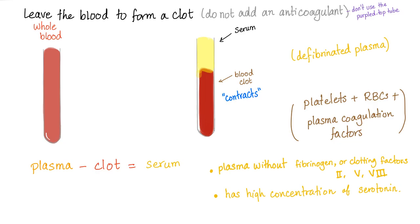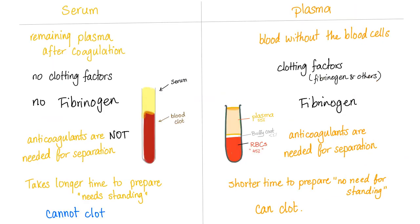Plasma without fibrin equals serum. So serum is plasma without fibrin or clotting factors, and it has a high concentration of serotonin. A quick comparison: serum is defined as the remaining plasma after coagulation and contraction of the clot, while plasma is the blood without the blood cells — the fluid part of the blood. Serum has no clotting factors; plasma has clotting factors including fibrinogen and others. Serum has no fibrinogen; plasma has fibrinogen. That's why serum cannot clot — it doesn't have any clotting factors — but plasma can clot.